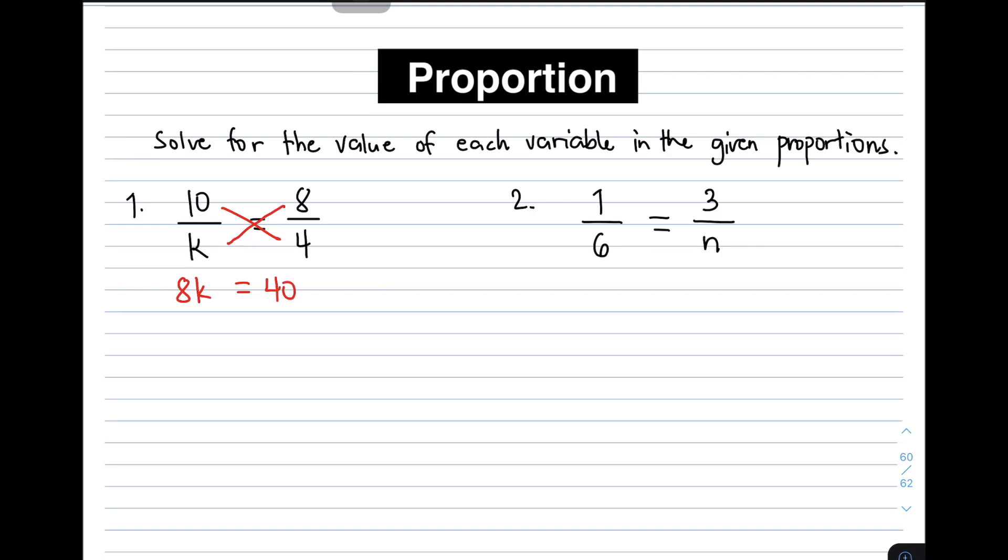So in this next step, all you need to do is to isolate the variable k. Meaning we need to eliminate 8. Sir, how? Now, to eliminate 8, we need to divide both sides of the equation by 8.